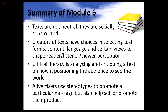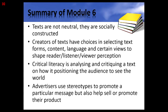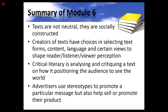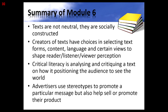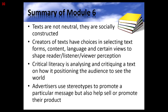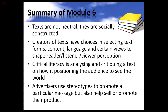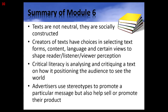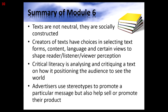To summarise Module 6: we now know that texts are not neutral — they are socially constructed. Creators of texts have choices in selecting text forms, content, language and certain views to shape reader, listener and viewer perception. Critical literacy is a valuable skill for students to learn — how to analyse and critique a text on how it positions the audience to see the world. We also know that advertisers use stereotypes to promote a particular message and help sell their product. Your role as a teacher is to enable your students to navigate the meaning of the vast array of texts they will be exposed to throughout their lives.